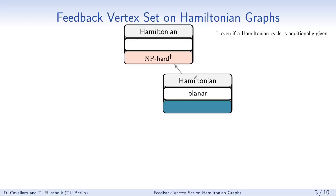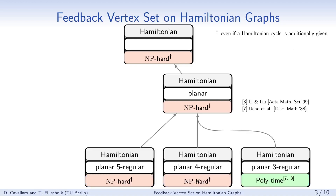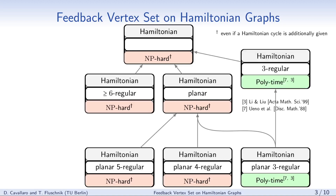By our results, feedback vertex set is not only NP-hard on Hamiltonian graphs, but also on planar Hamiltonian graphs, even if a Hamiltonian cycle is additionally given. This comes from the fact that we proved feedback vertex set remains NP-hard on planar 4- or 5-regular Hamiltonian graphs. Note that on 3-regular graphs, feedback vertex set is solvable in polynomial time. For any regular graph that is at least 6-regular Hamiltonian, we also showed feedback vertex set remains NP-hard.